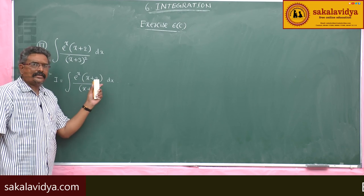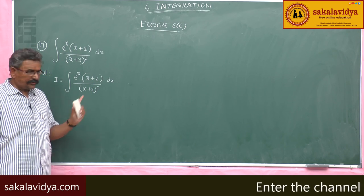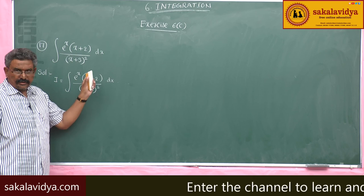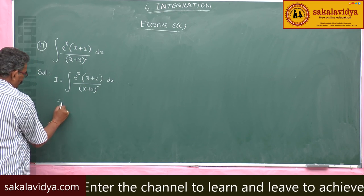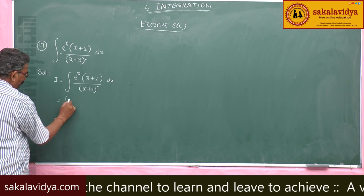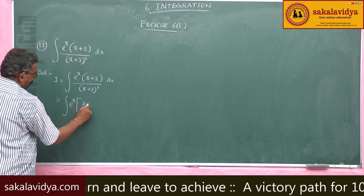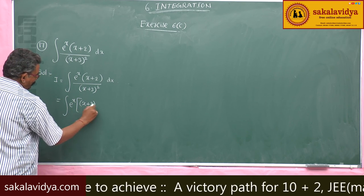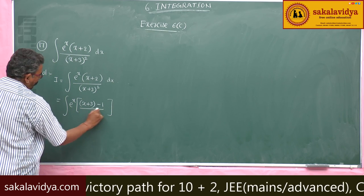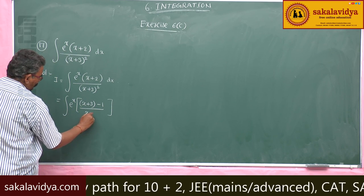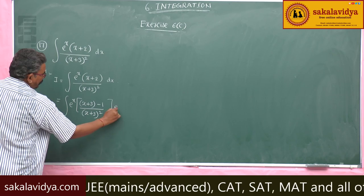Can we write x+2 in terms of x+3? Yes — x+2 can be written as (x+3)−1. So this becomes the integral of e^x times (x+3−1)/(x+3)² dx, which equals x+2 only, by (x+3)² dx.